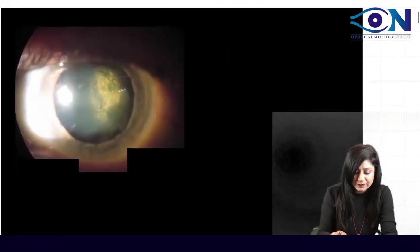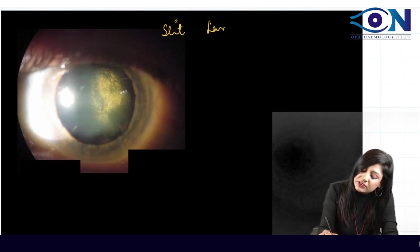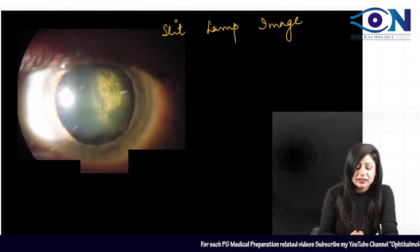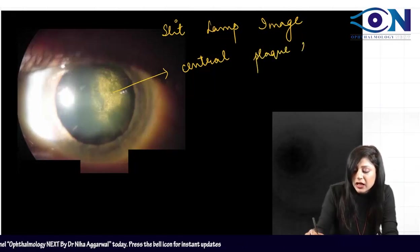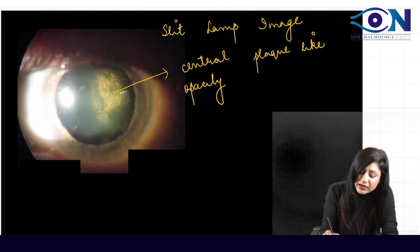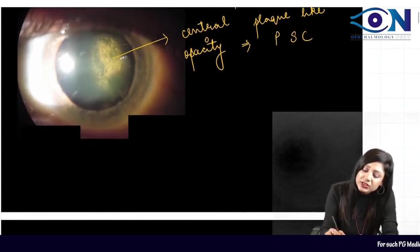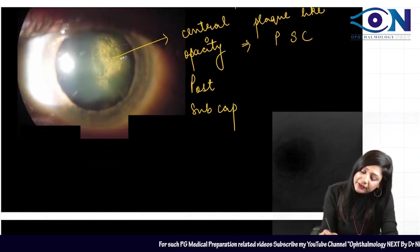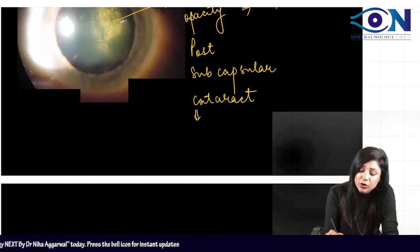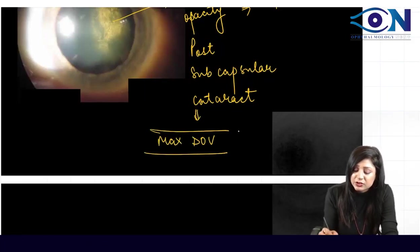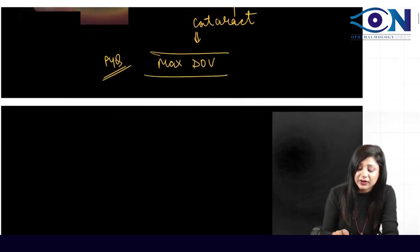This is a slit lamp image where you can see the central plaque-like opacity. When you see a central plaque-like opacity, this is actually posterior subcapsular cataract (PSC). PSC causes the maximum diminution of vision — this is an important PYQ. The morphology which causes maximum diminution of vision is posterior subcapsular cataract. Now, what are the causes of PSC?